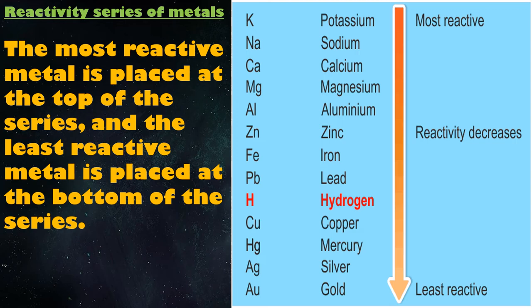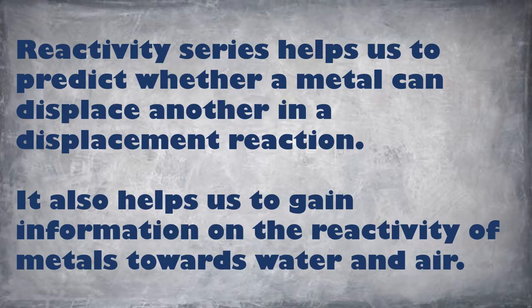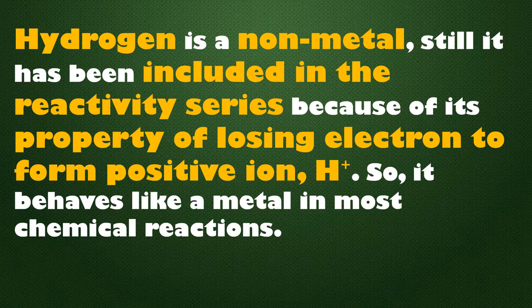The figure here shows the reactivity series of various metals. The reactivity series helps us to predict whether a metal can displace another in a displacement reaction. It also helps us gain information on the reactivity of metals towards water and air. Hydrogen is a non-metal, but it has been included in the reactivity series because of its property of losing electrons to form positive ions, so it behaves like a metal in most chemical reactions.